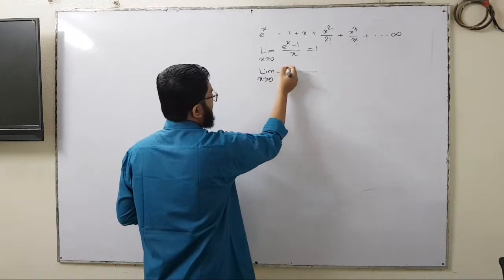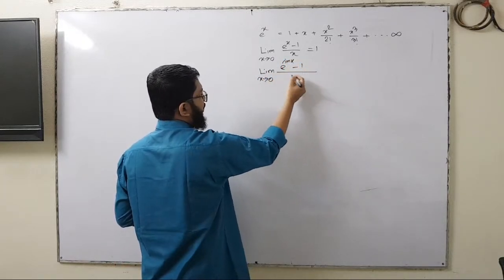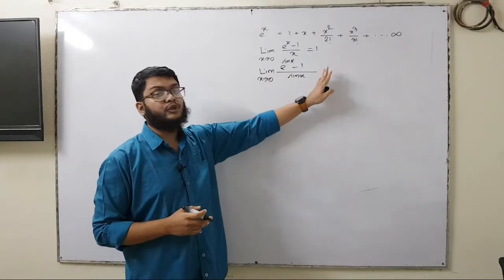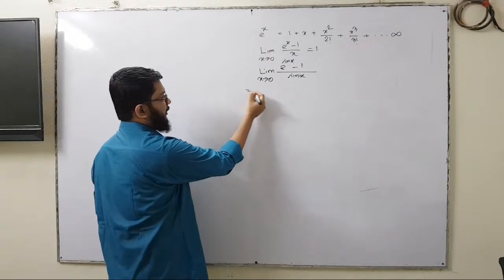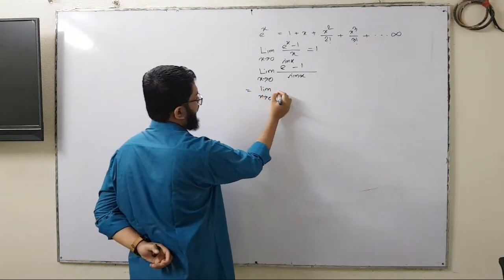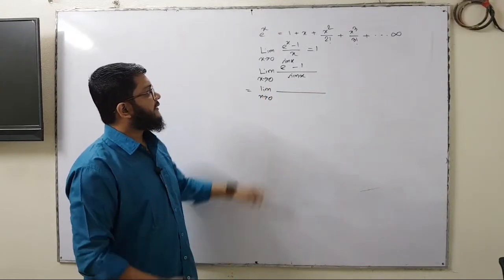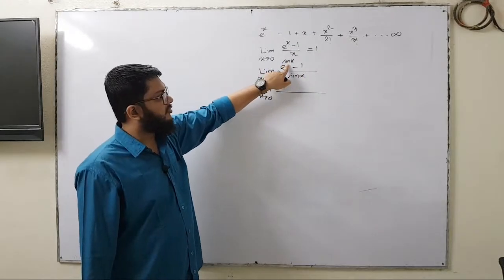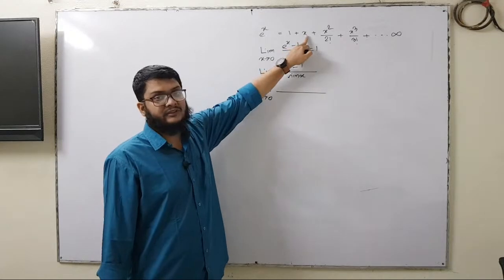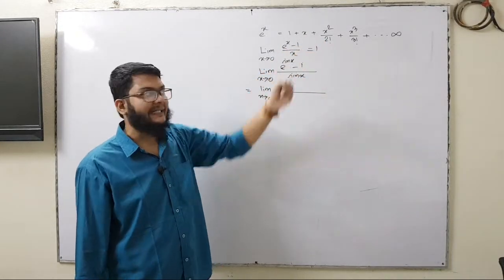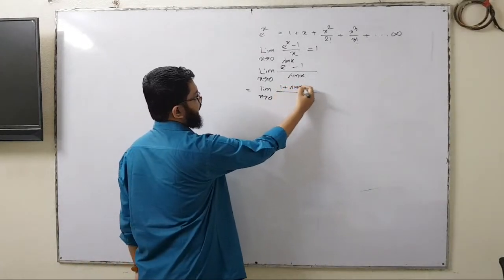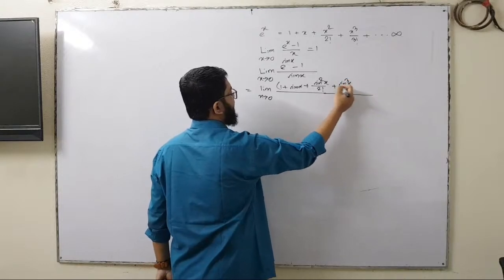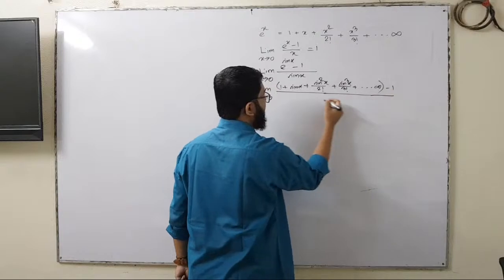Limit x tends to 0, e to the power sin x minus 1 divided by sin x. What would the result be? It would also be 1. Let me show you how. We can expand e to the power sin x. Since e to the power x equals 1 plus x plus x squared by 2 factorial plus x cubed by 3 factorial all the way to infinity, here we have sin x instead of x, so all the x's are replaced with sin x. We get 1 plus sin x plus sin squared x by 2 factorial plus sin cubed x by 3 factorial, all the way to infinity, minus 1, divided by sin x.